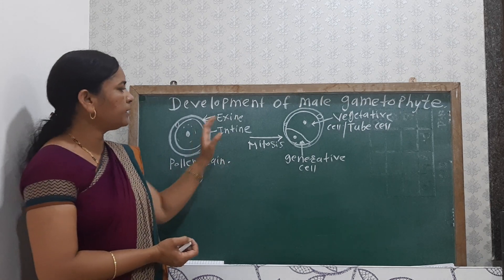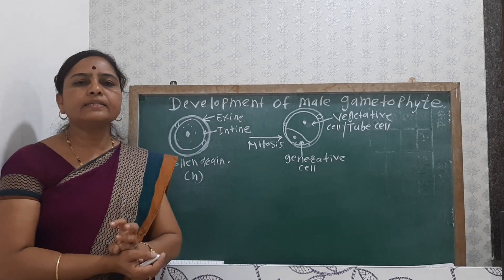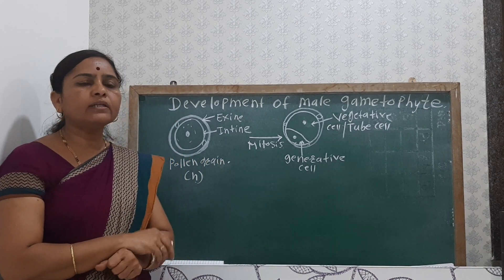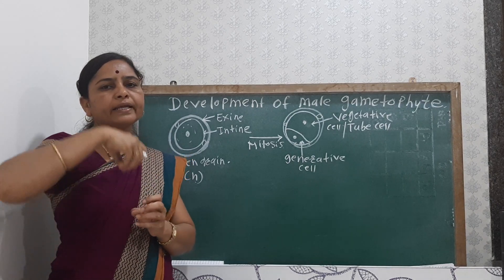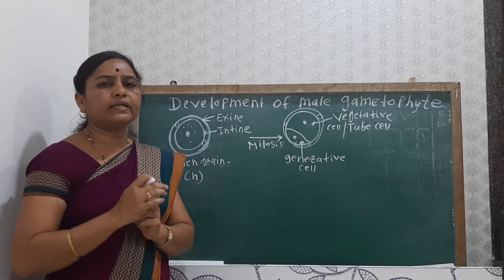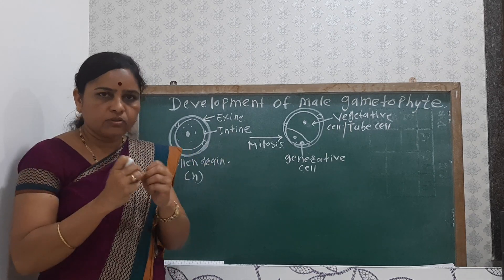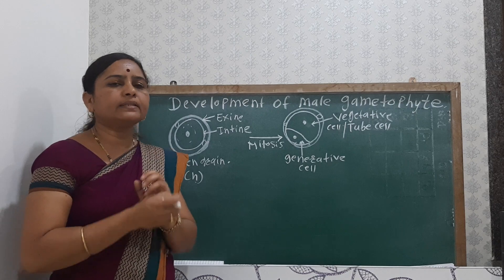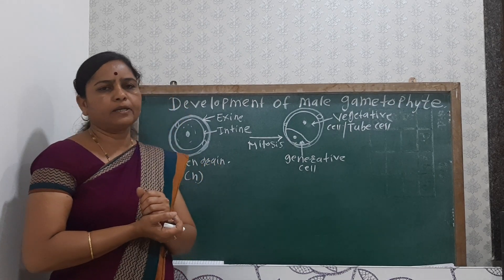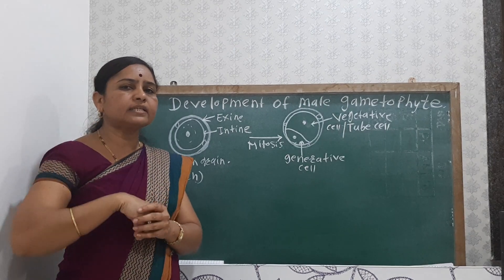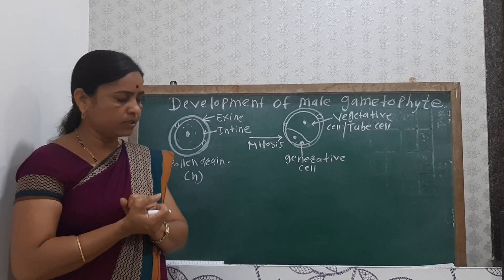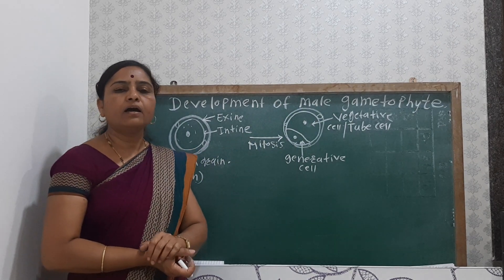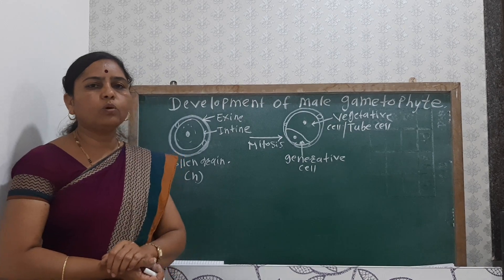This development mainly takes place when the pollen grain is inside the pollen sac. When the anther gets mature, the pollen grains come out, that is when the anther lobe gets dehisced. The pollen grains are then transferred by the process of pollination, and when they fall on the stigma, germination takes place. This is the development that takes place before pollination.